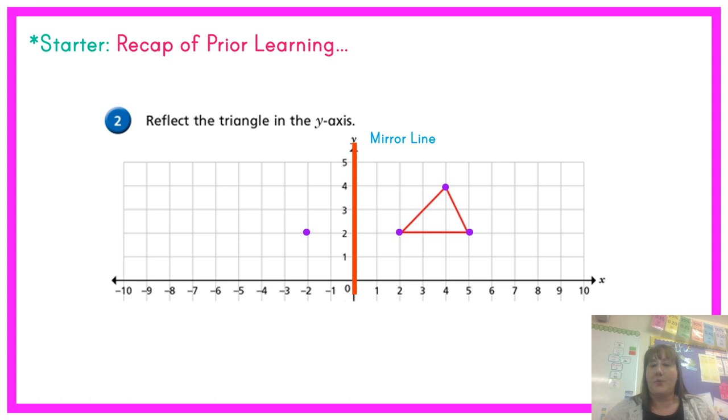And then you can repeat it for each point. So here we can see that this point here is 1, 2, 3, 4, 5 away from the mirror line as it's 5 on our x-axis. So it has to be 5 away from the mirror line on the other side. And our final vertex is 4 away from the mirror line on this side. So it has to be 4 away from the mirror line on this side. Once you've plotted all your points, you then join them together with a ruler to create your final shape.